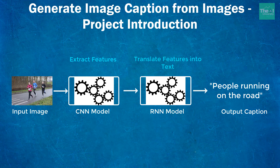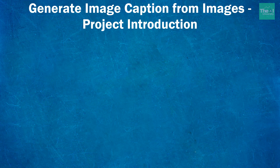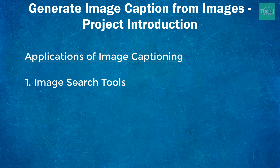Let's quickly move on to some of its applications. Number one is image search tools, where automated captioning can help searching for images based on a search string provided. A caption can be generated from the image first, and then a search can be performed on that generated text caption.